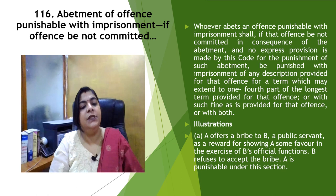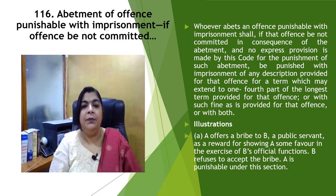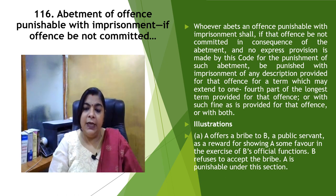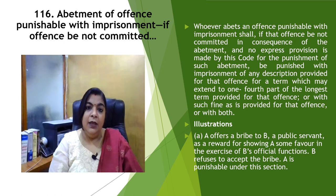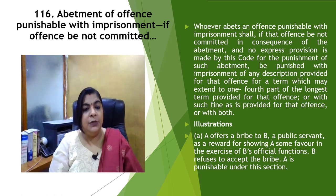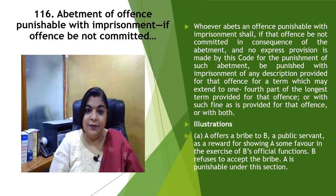For example, if A offers a bribe to B who is a public servant, and B refuses to take the bribe, even though B refuses to take the bribe, still person A will be responsible and punishable under this section.